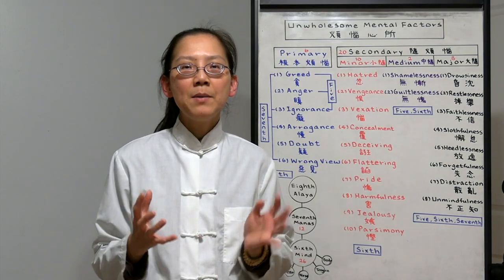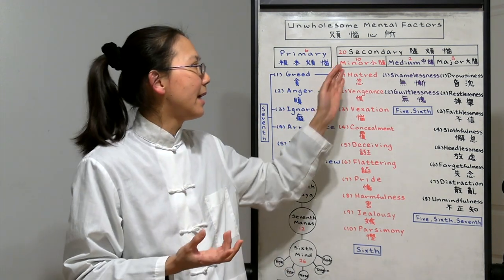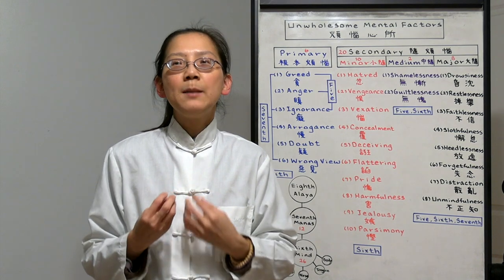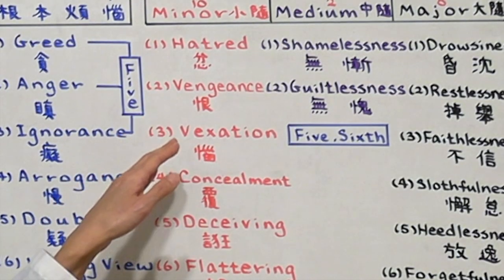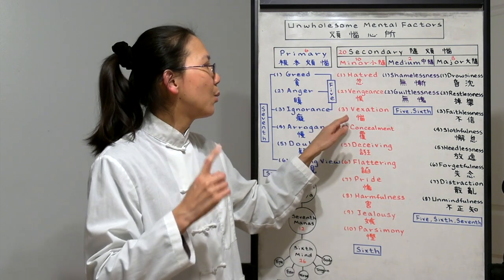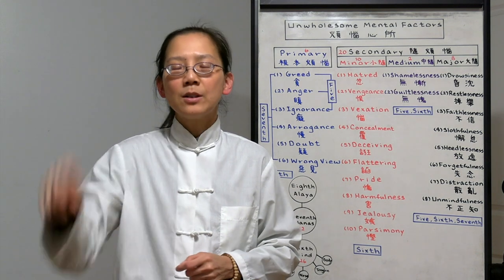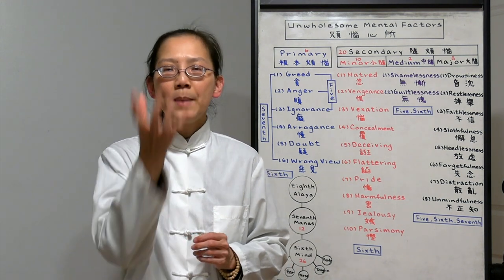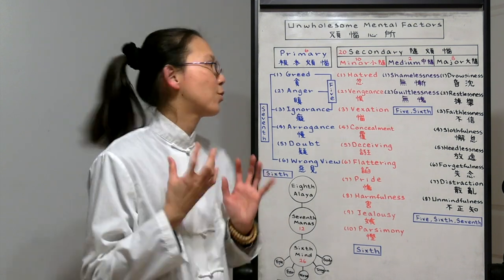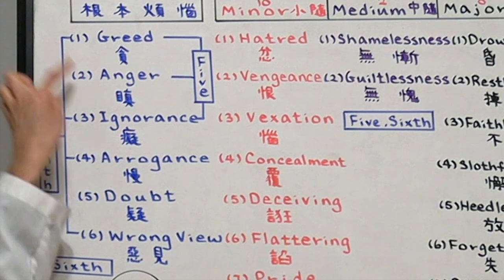Number two is vengeance. After the things happen, we hold grudges. We might not show our hatred right there. We repress it and we keep it inside of our heart. Number three is vexation. Because we have vengeance, we are likely to develop vexation. That's when you really want to give back to others. We want to sue others. Take revenge or talk back. That's all because we have strong vexation. All these are because of anger.